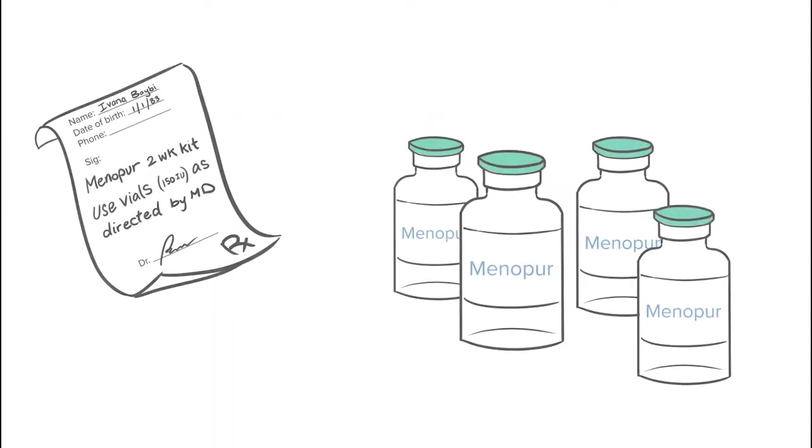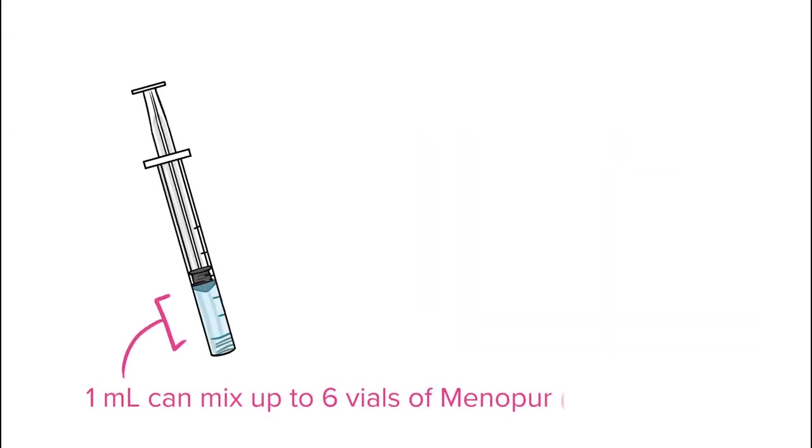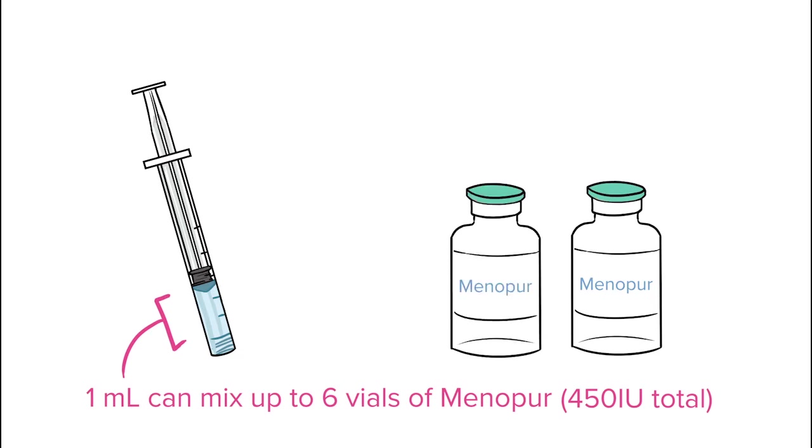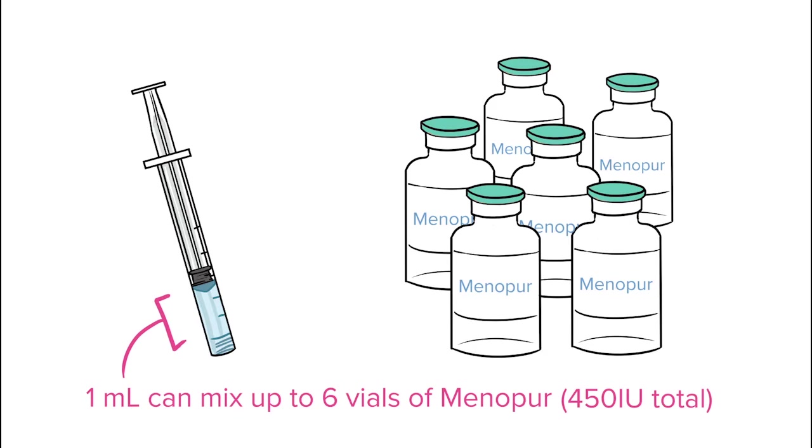Repeat this video segment if your doctor told you to use more Menopur vials. If there is 1 ml of liquid in the syringe, it can only be used to mix up to 6 vials of Menopur powder total, which is a total dose of 450 IU.